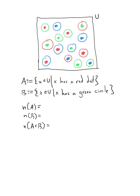So I have two sets here. The first set A are all objects in our universe such that the object has a red dot. The second set B are objects in our universe such that X has a green circle. So we're asked, what's the cardinality of set A? How many objects are in set A?